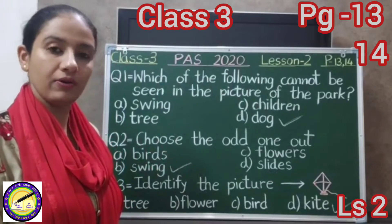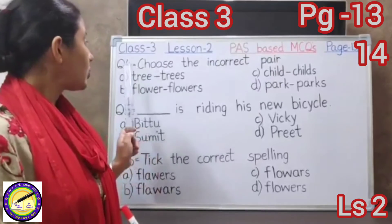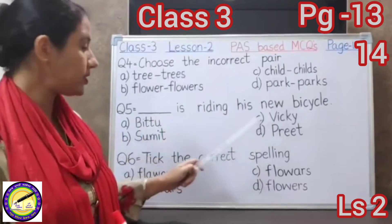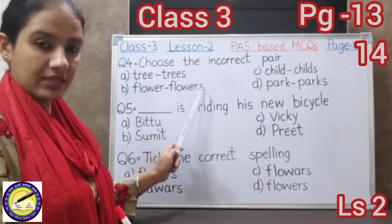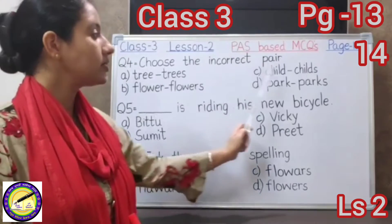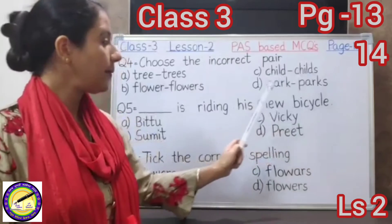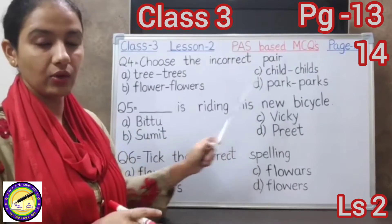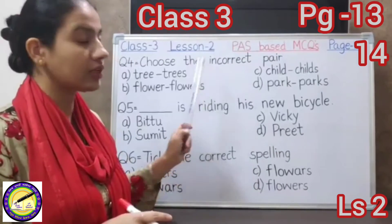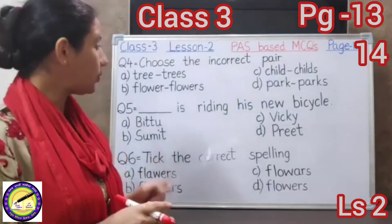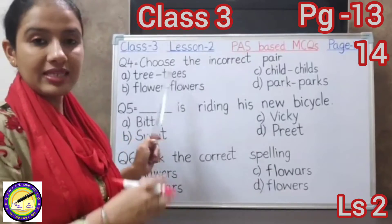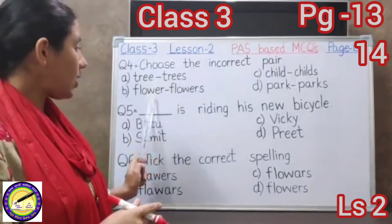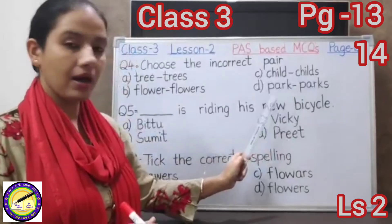Let us move on to question number 4: choose the incorrect pair. The options are: A — tree, trees; B — flower, flowers; C — child, child; D — park, parks. Each option gives a singular and plural pair. Tree/trees is correct. Flower/flowers is correct. Child/child is incorrect — the plural of child is children, not child. Park/parks is correct.